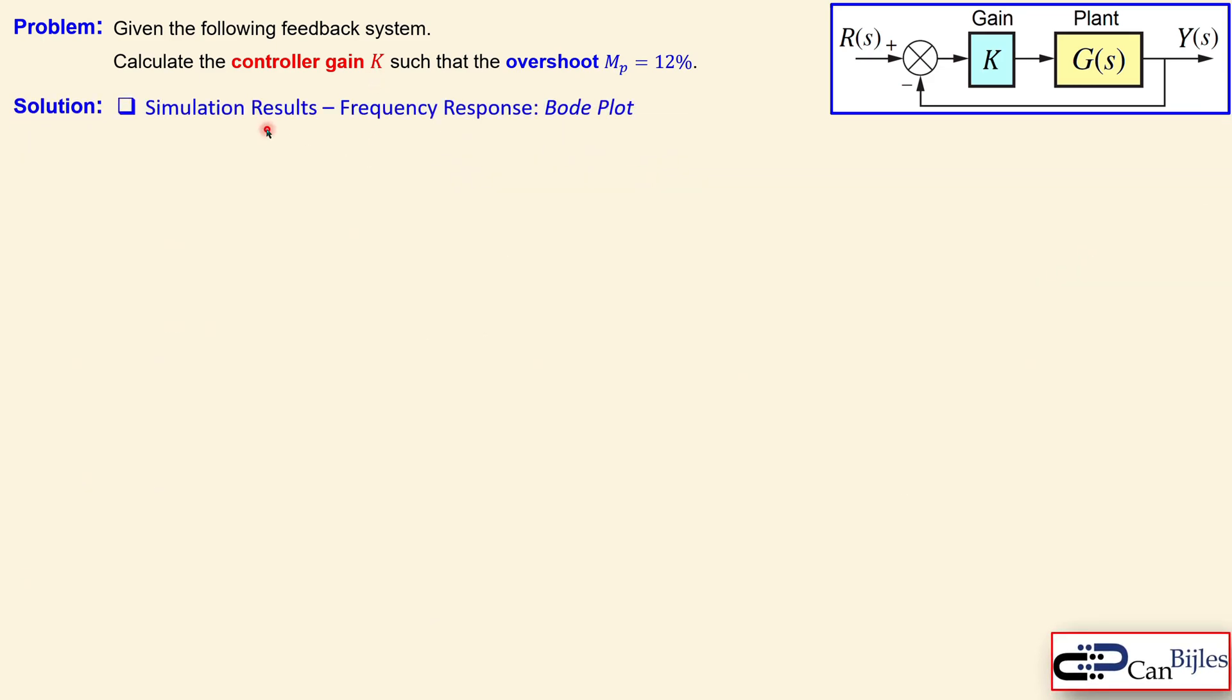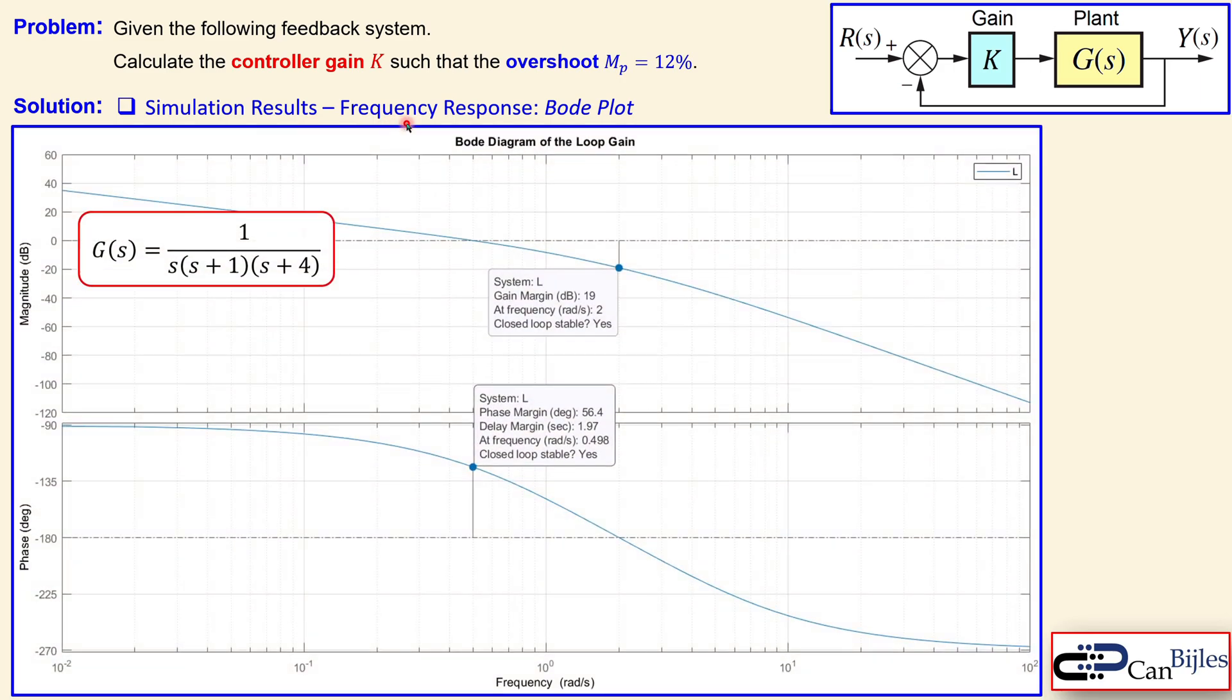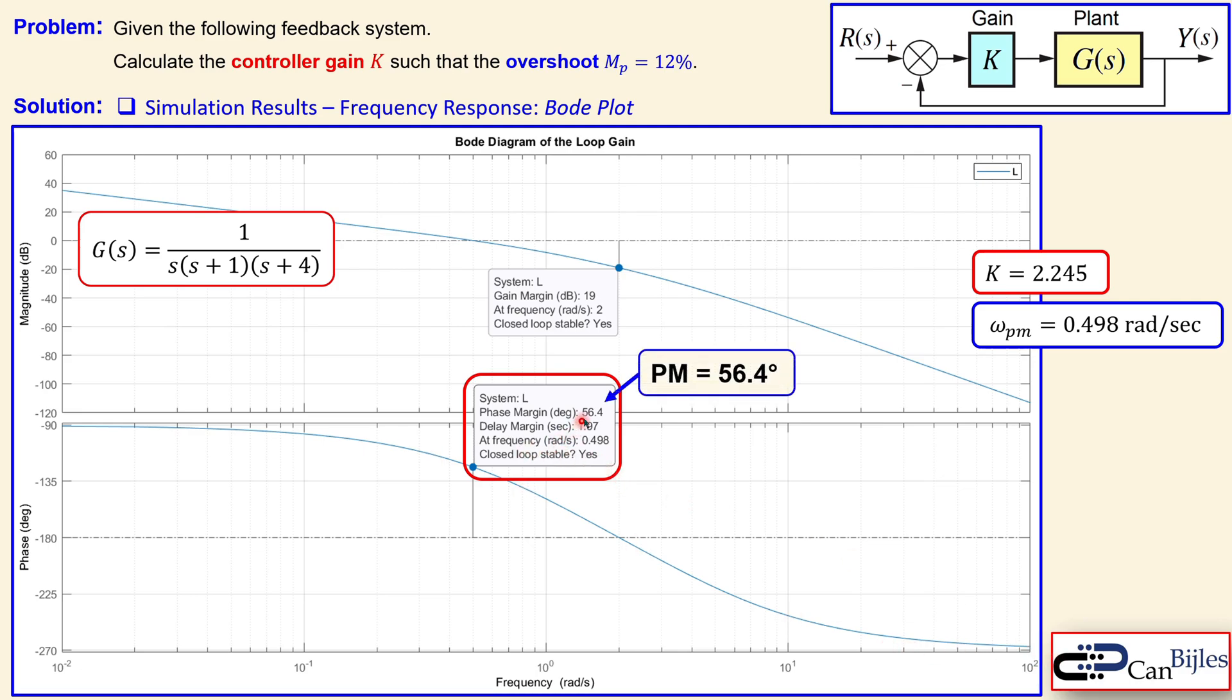We need to verify this. Let's look at the simulation results and the frequency response, the Bode plot. This is the transfer function I said before. You see the phase margin and gain margin labels. The label here is showing the phase margin of 56.4 degrees as we have calculated, and also at the frequency of 0.498 radians per second. So this is verified.